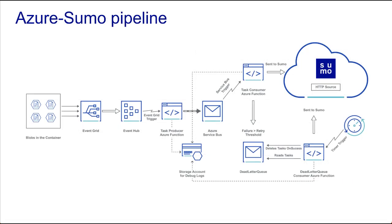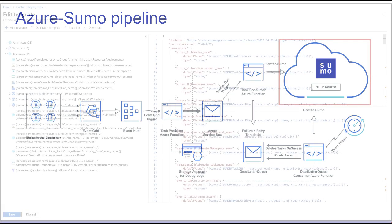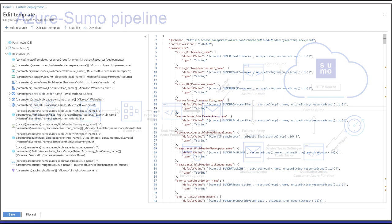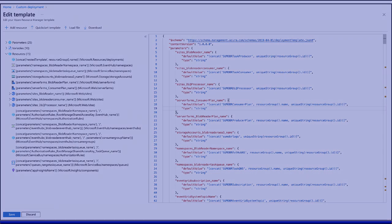In this video, we've learned about the Azure-to-Sumo event-based pipeline for shipping logs from Azure Block Blob Storage to an HTTP source on a hosted collector in Sumo Logic. We've also learned about Sumo Logic's Azure Resource Management, or ARM, template that is used to build most of the components in the pipeline. We hope this video has been helpful. Thanks for watching.